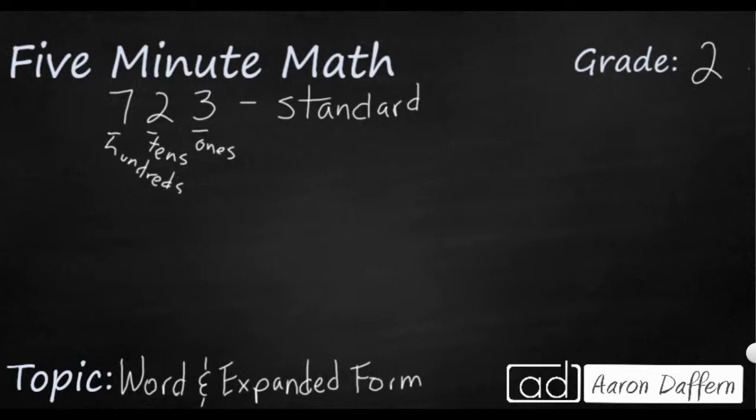Now that's one way that we can represent that value of 723. Another way we could do it is word form. So word form is when we are using letters only, no numbers, no digits, to write our number. So if I wanted to write this number, I would say seven hundred and then I would write exactly what I'm saying. I would say seven hundred and then twenty-three.